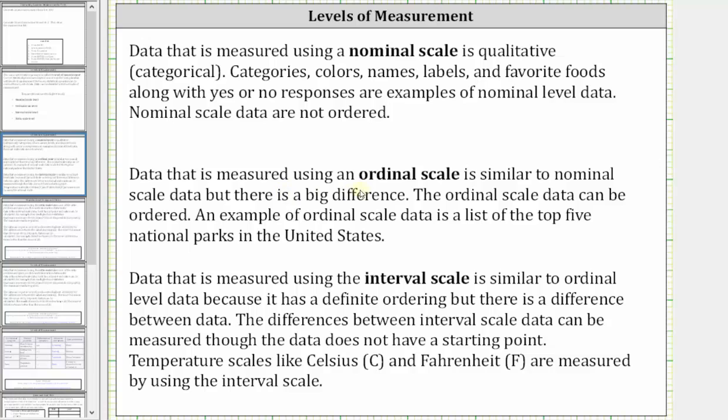Data that is measured using an ordinal scale is similar to nominal scale data, but there is a big difference. The ordinal scale data can be ordered. An example of ordinal scale data is a list of the top five national parks in the United States.